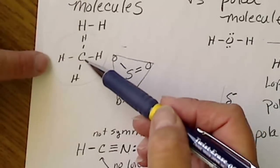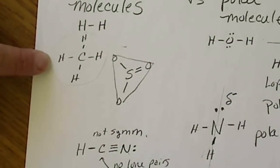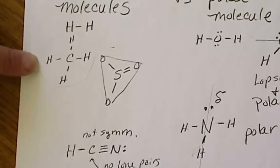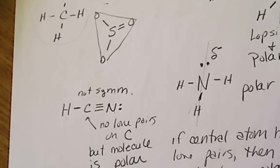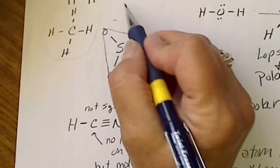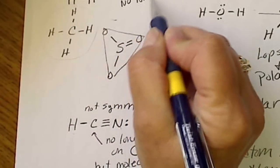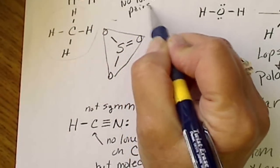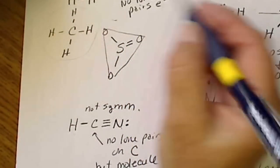This is a sulfur with three oxygens around it - no lone pairs. This is a carbon with four hydrogens around it - no lone pairs. If we don't have lone pairs on the central atom, no lone pairs usually means the molecule is nonpolar.